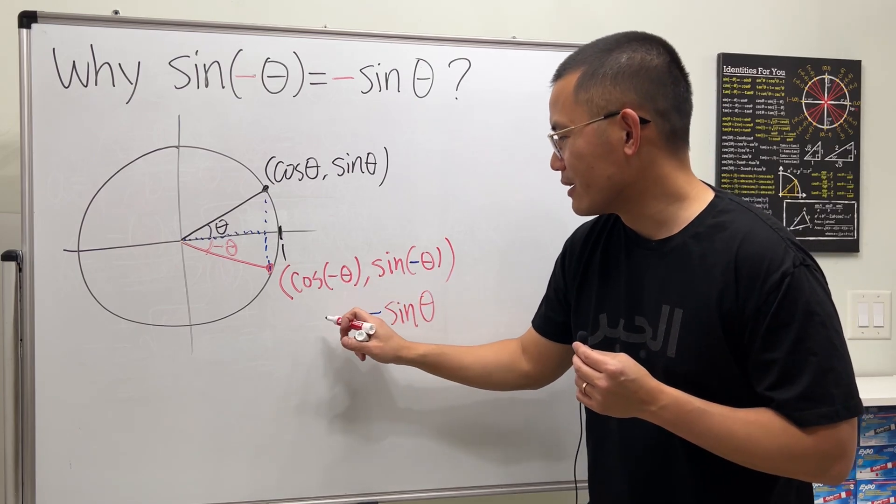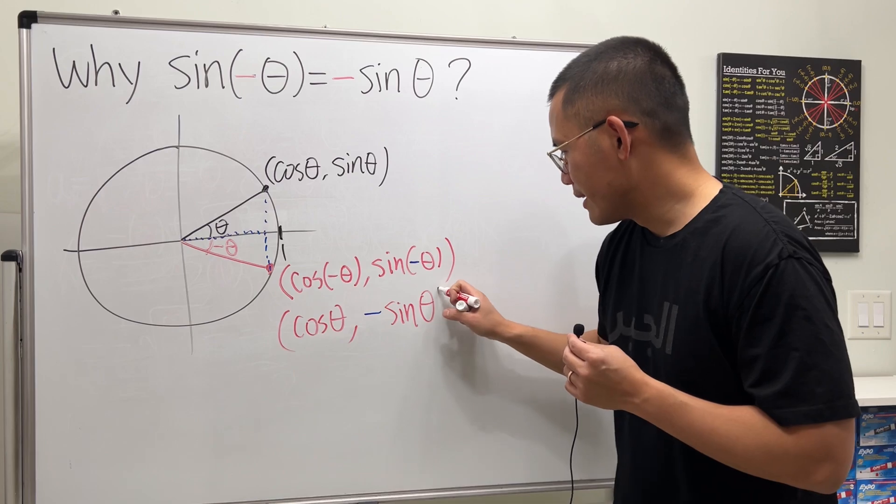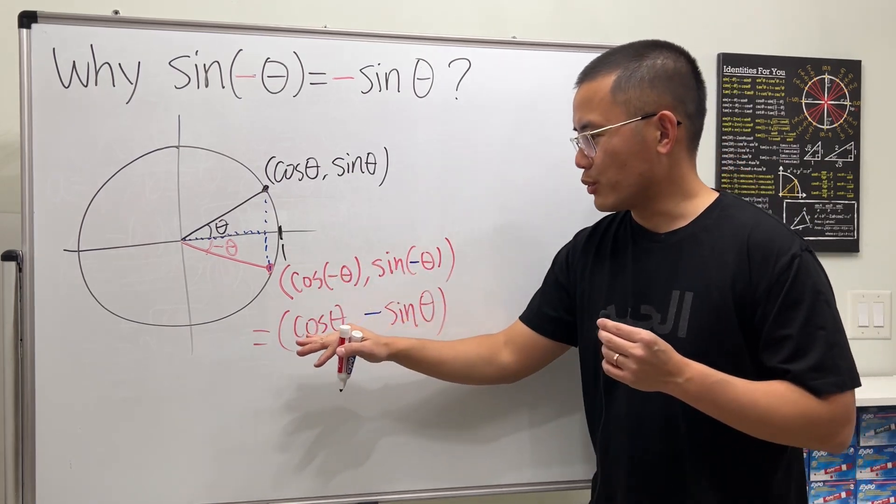And negative theta here is still the same x value. So this, the negative doesn't matter. So that's the same as cosine theta, comma, negative sine theta. So this is equivalent to that.